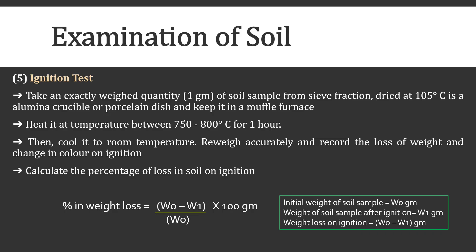Then ignition test: accurately weigh 1 gram of soil sample from the C fraction dried at 105°C, place it in an alumina crucible or porcelain dish, and keep it in a muffle furnace. Heat at a temperature between 750 to 800°C for one hour. Cool it to room temperature, re-weigh accurately, and record the loss of weight and change in color on ignition. Calculate percentage weight loss: (W0 − W1) / W0 × 100, where W0 is the initial weight and W1 is the weight after ignition.